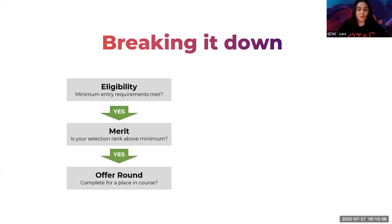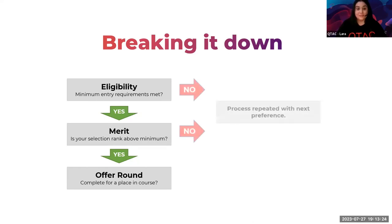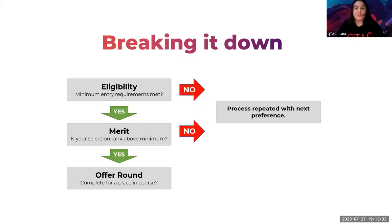Once you've met eligibility and merit, you can go into the offer round. You might have an ATAR of 99.95, but if you haven't met a subject requirement, you can't be considered for a place — you have to meet every single requirement. If a preference doesn't result in an offer, the process will repeat for your next preference. The system keeps working its way down until it can release an offer to you.